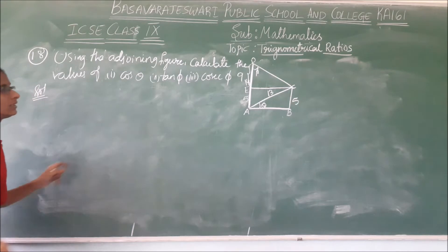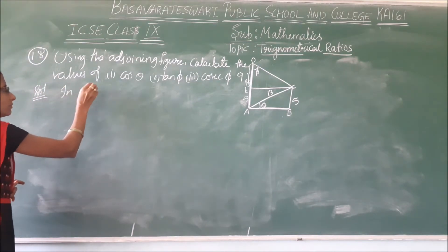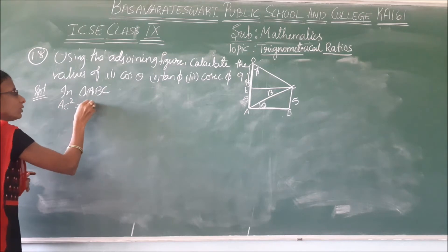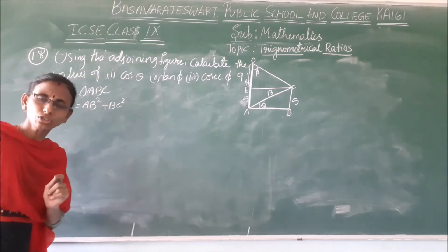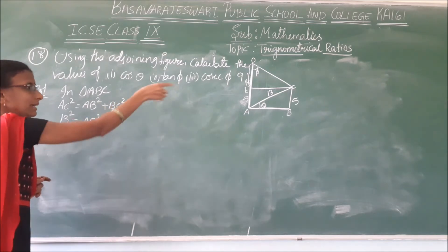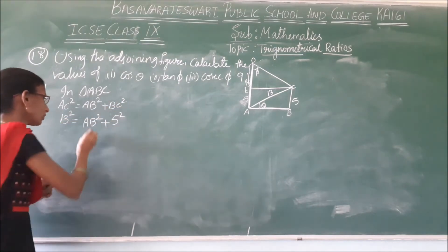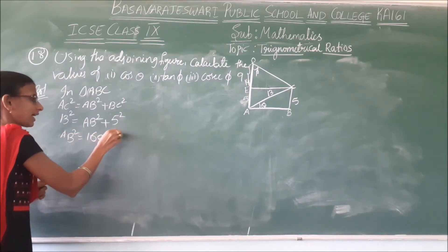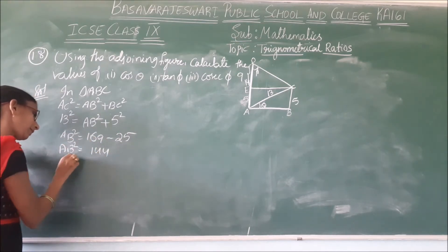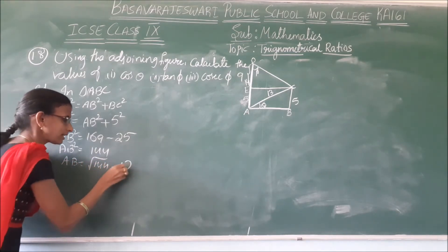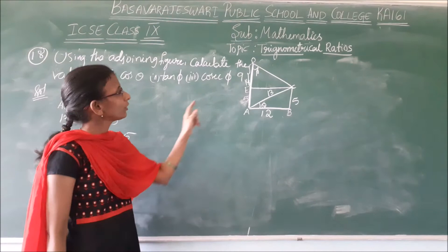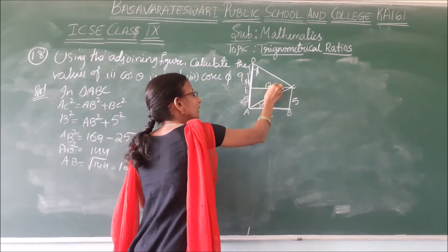Let's start with triangle ABC. AC squared equals AB squared plus BC squared. AC is 13, BC is 5. So AB squared equals 169 minus 25, which is 144. Therefore AB equals square root of 144, which is 12. And we also found that EC equals 12 centimetres.